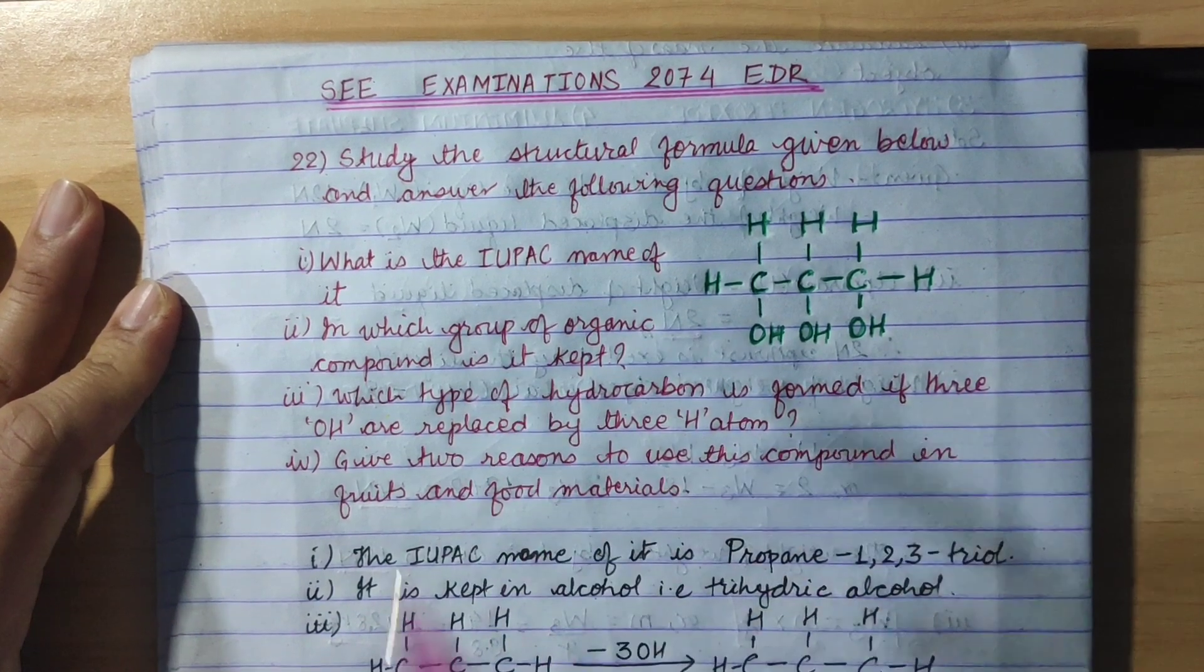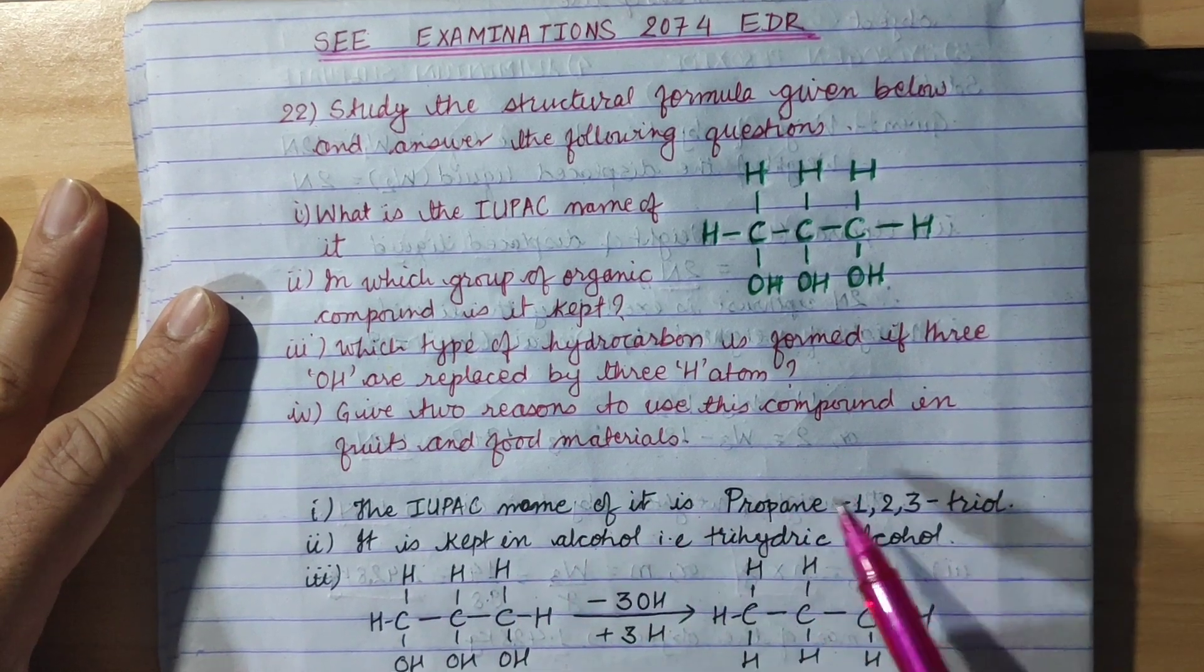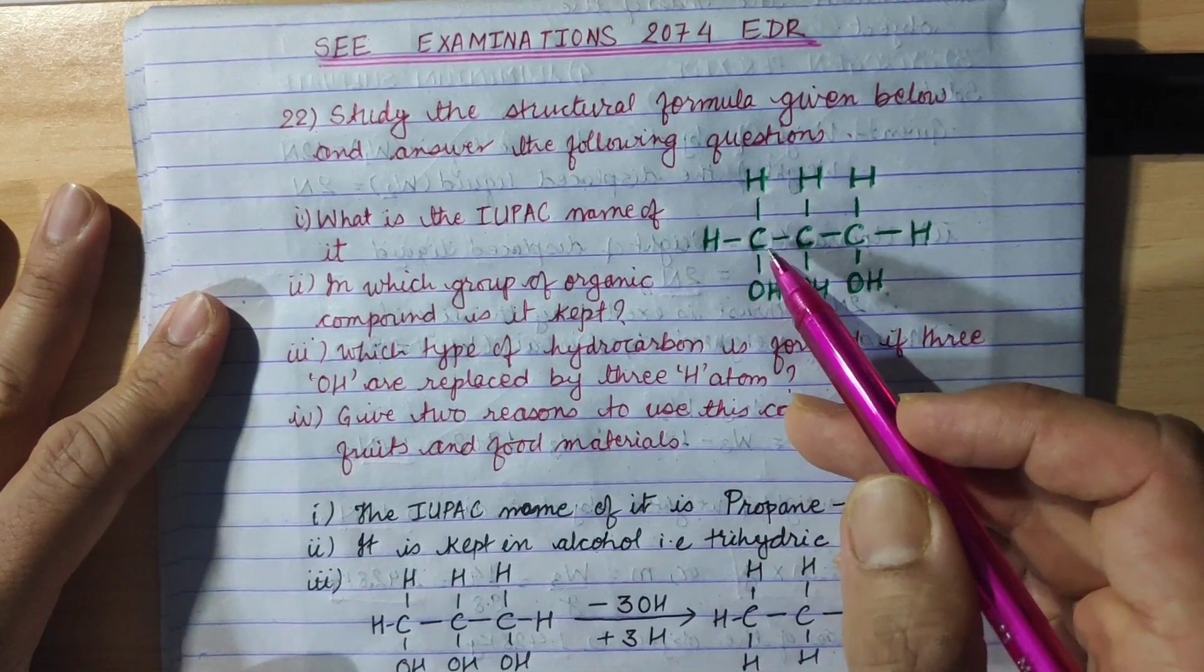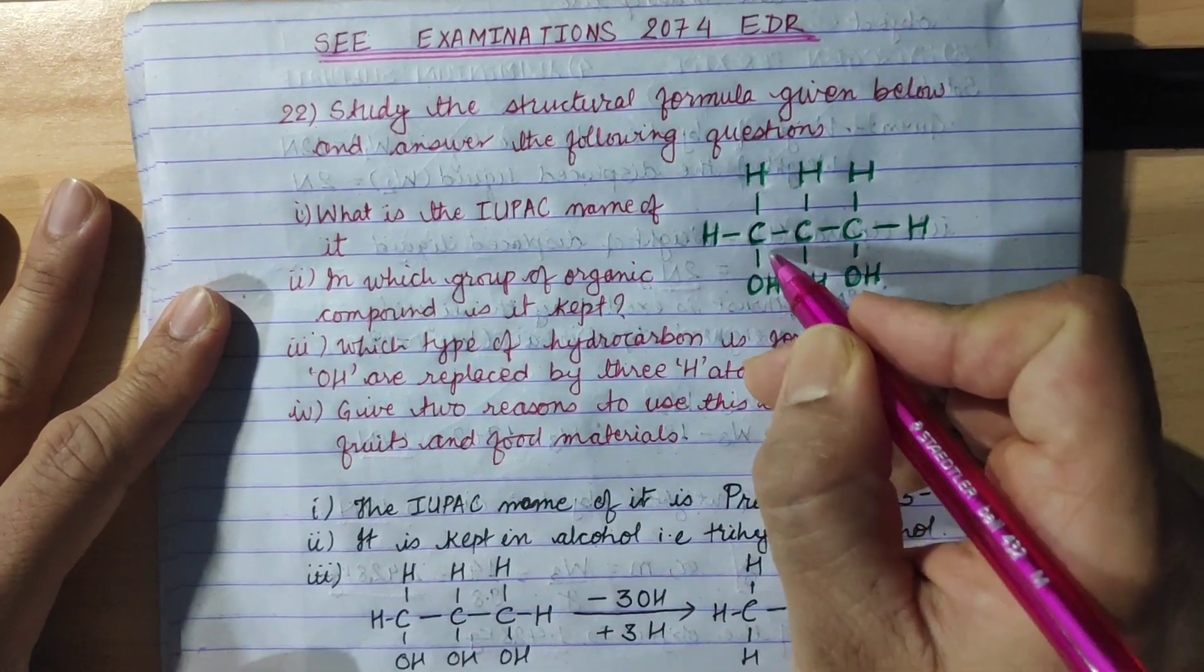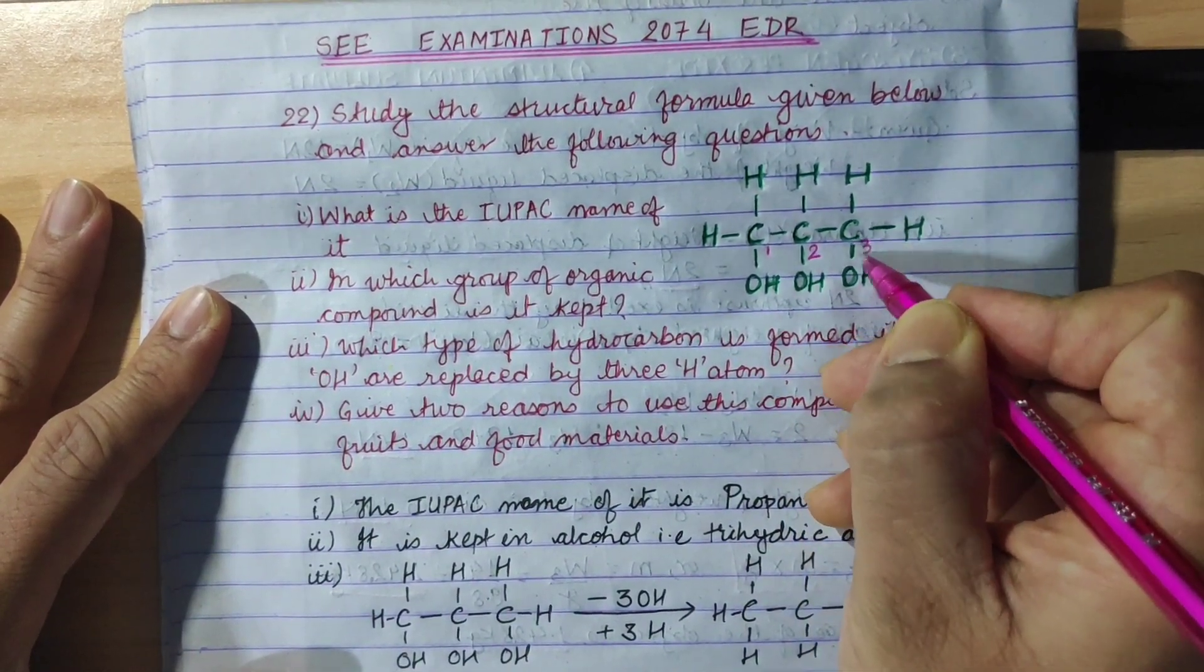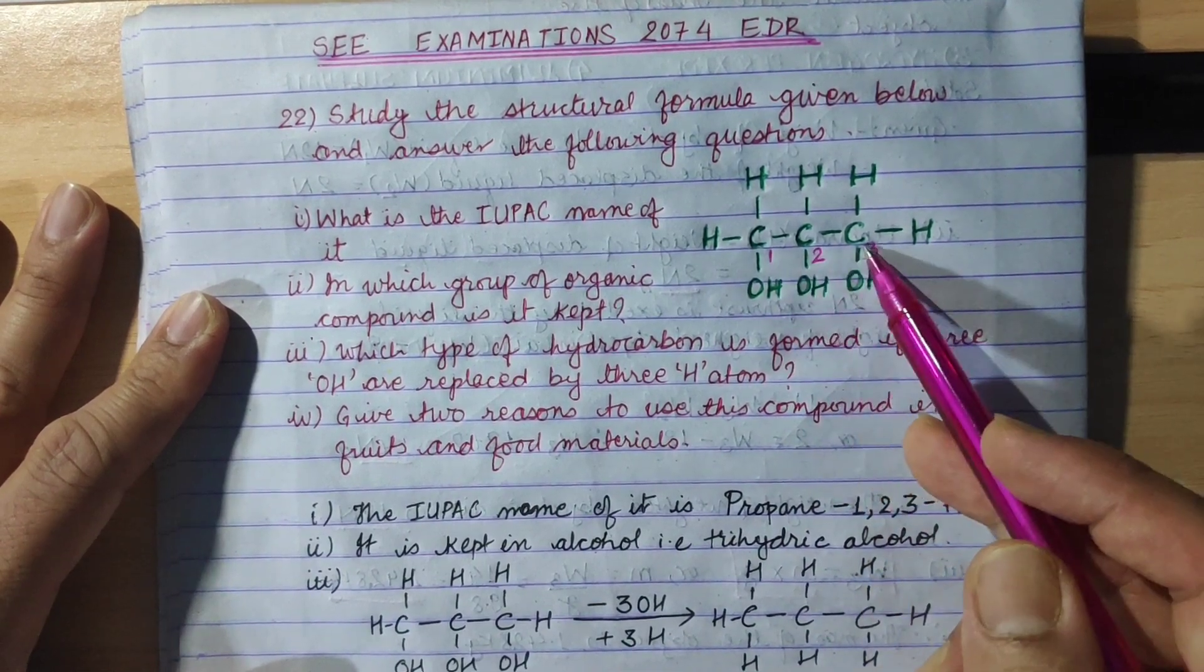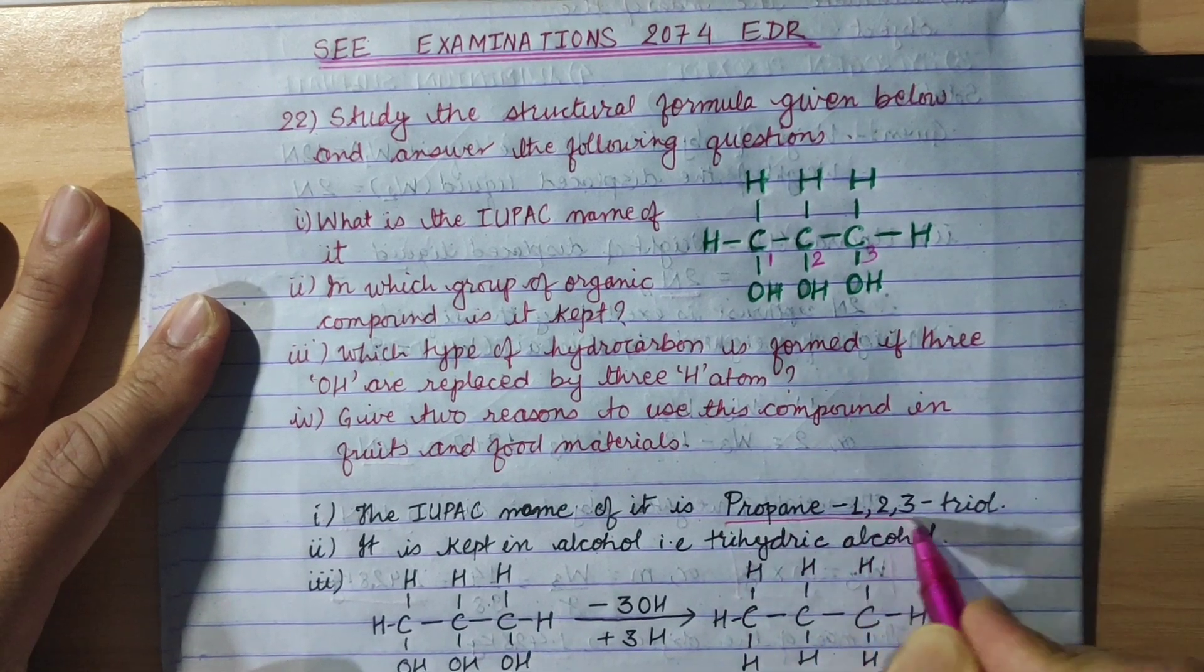The first question is what is the IUPAC name? The IUPAC name of it is Propane-1,2,3-triol. 3 OH is triol. Propane-1,2,3-triol.